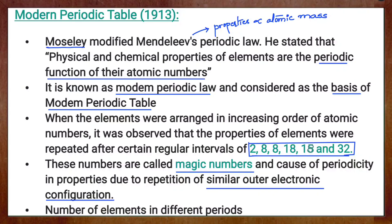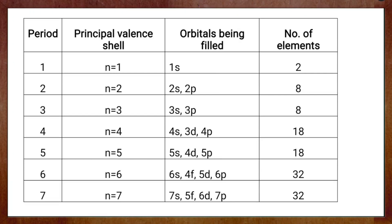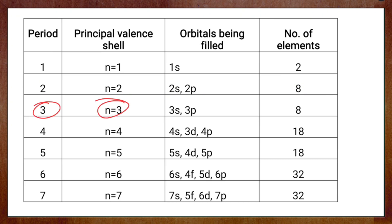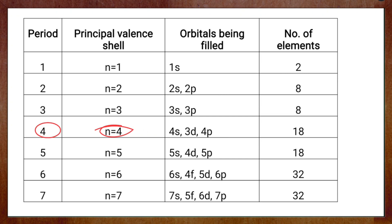Let us consider the different number of elements present in different periods of the periodic table. There are seven periods. In the first period, the principal valence shell n=1, so the orbital being filled is 1s, and there are two elements. In the second period, n=2, and 2s and 2p orbitals are filled after 1s, giving eight elements. For the third period, n=3, and 3s and 3p orbitals are filled after 1s, 2s, and 2p, again giving eight elements. For the fourth period, n=4, the orbitals filled are 4s, then 3d, then 4p, and we have 18 elements.